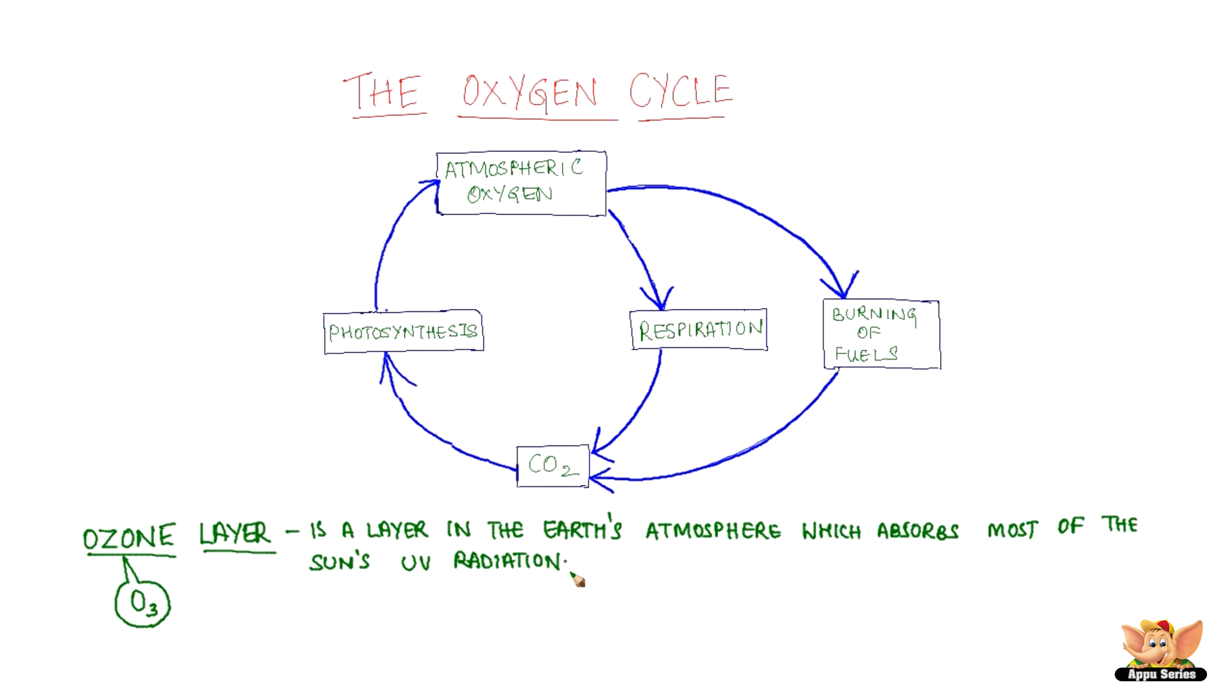Though ozone is very poisonous, the ozone layer is protective. Ozone layer is a layer in the earth's atmosphere which absorbs most of the sun's UV radiation.